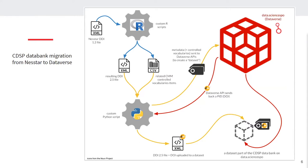The next step was to import each DDI 2.5 file into Dataverse to create a dataset and get back a DOI. Each DOI was then injected back into the corresponding DDI file. Because only the study-level documentation is used by Dataverse, the whole DDI 2.5 file with a DOI was finally deposited inside the dataset on Dataverse. At this point, we have a dataset with all the Dataverse metadata filled and also a complete DDI file available to download.